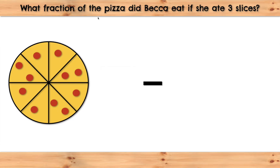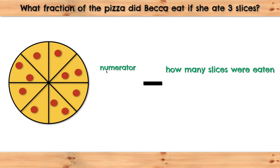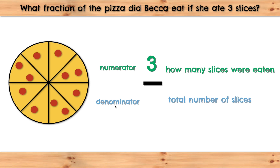What fraction of the pizza did Becca eat if she ate three slices? We need to figure out the numerator. The numerator stands for how many slices Becca ate. We know that Becca ate three slices, so the numerator is three. The denominator is the total number of slices.